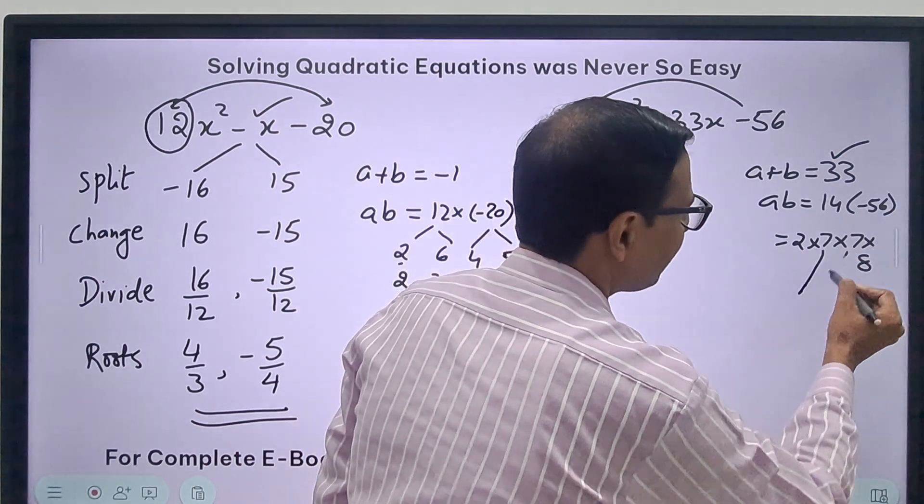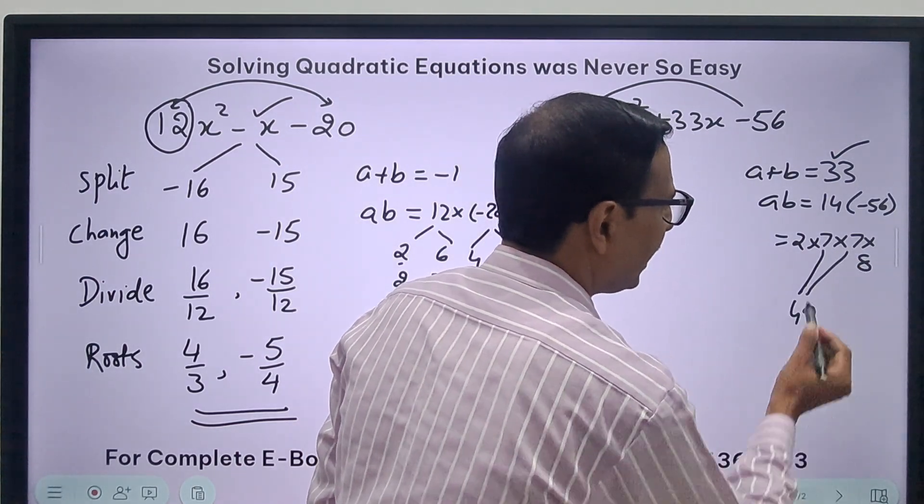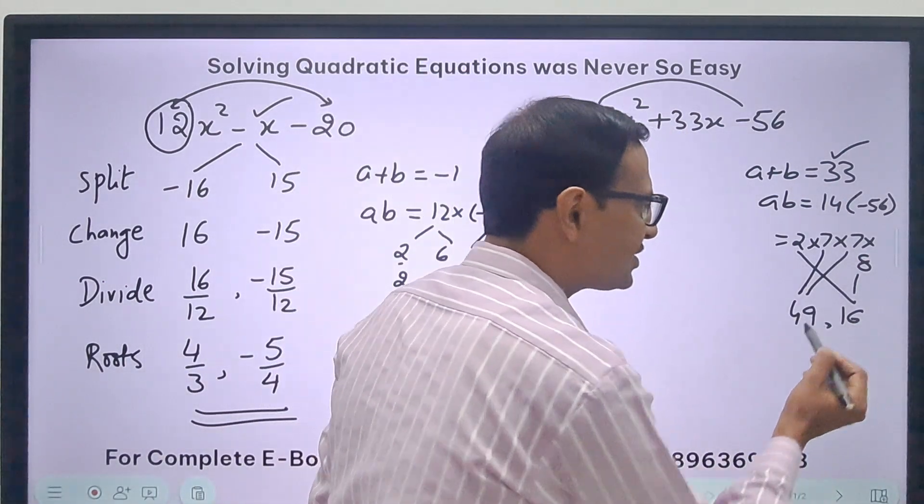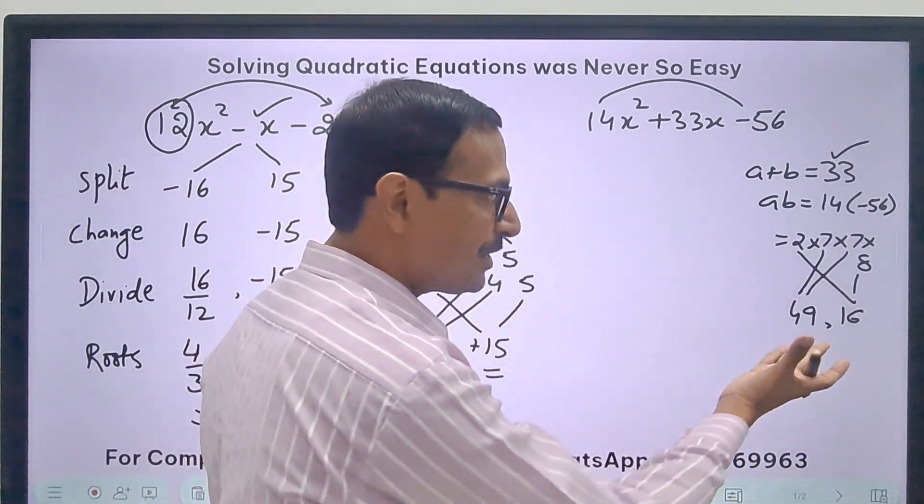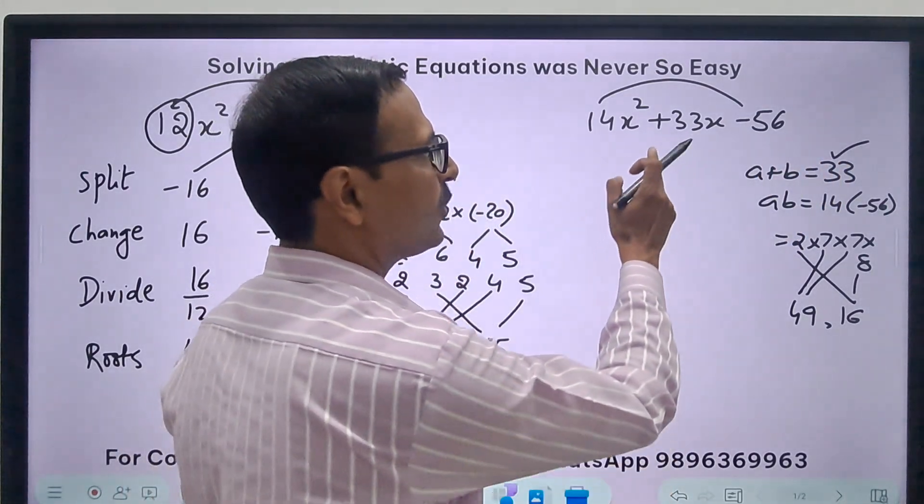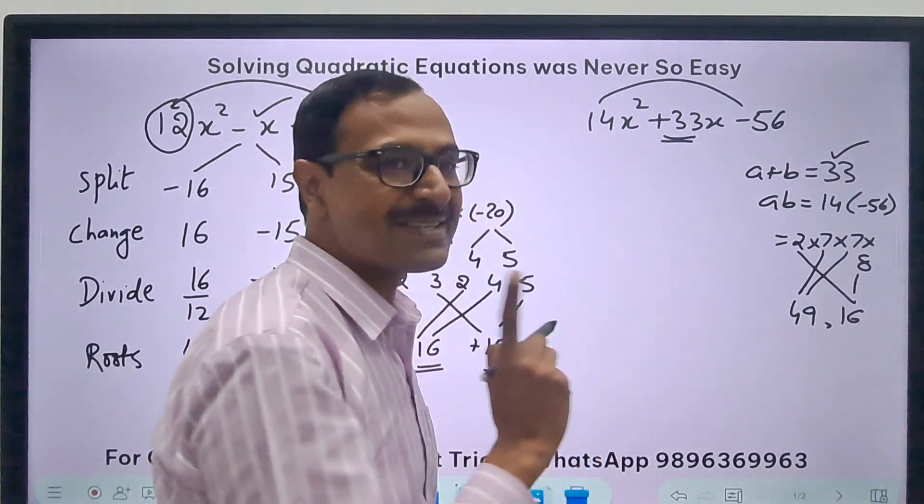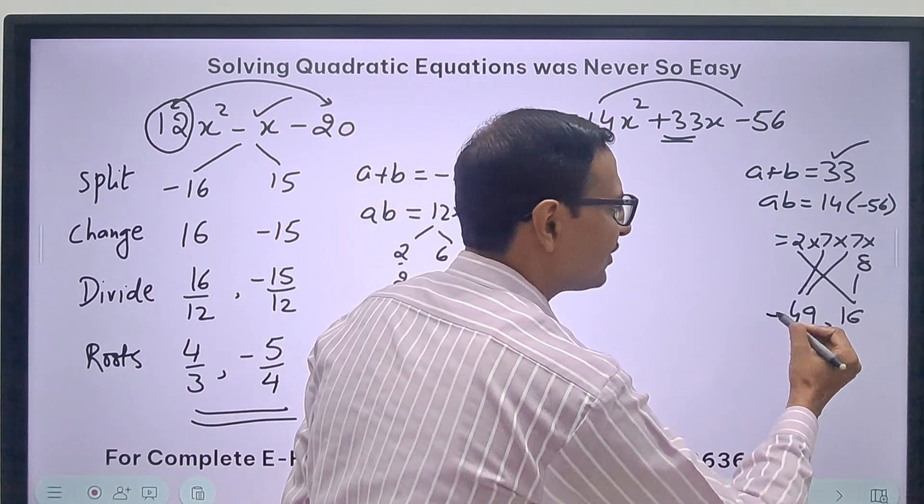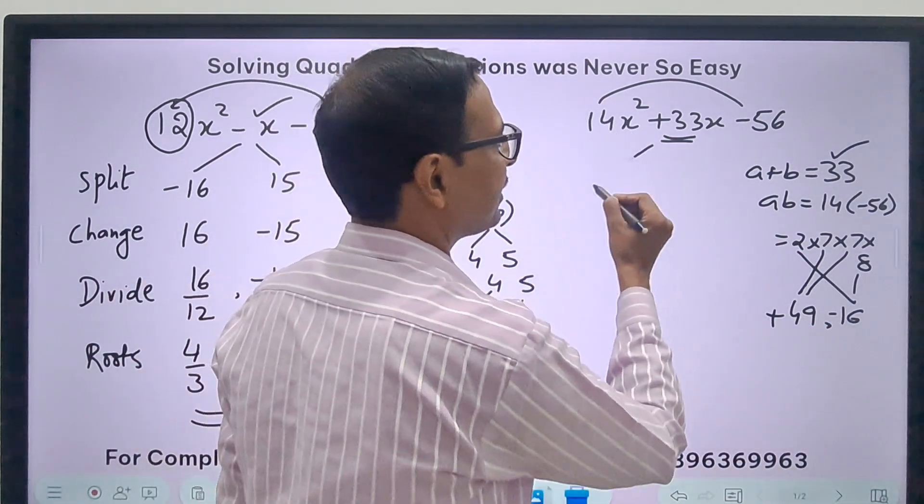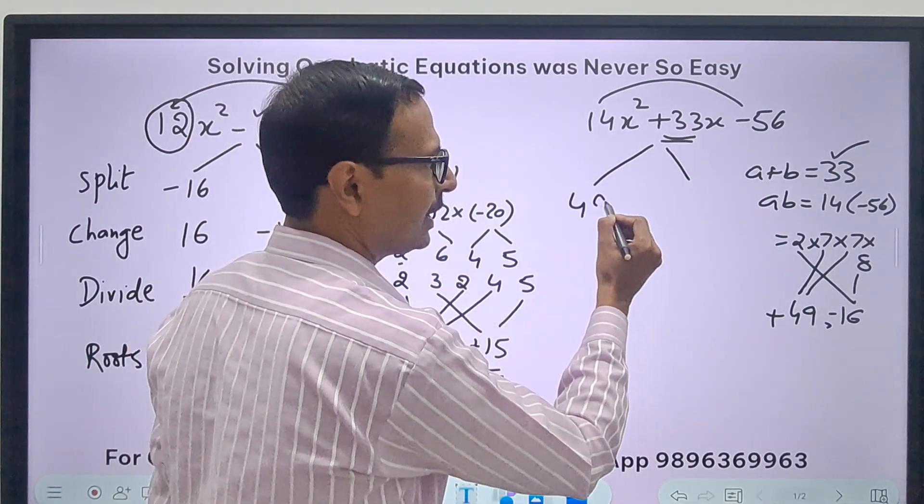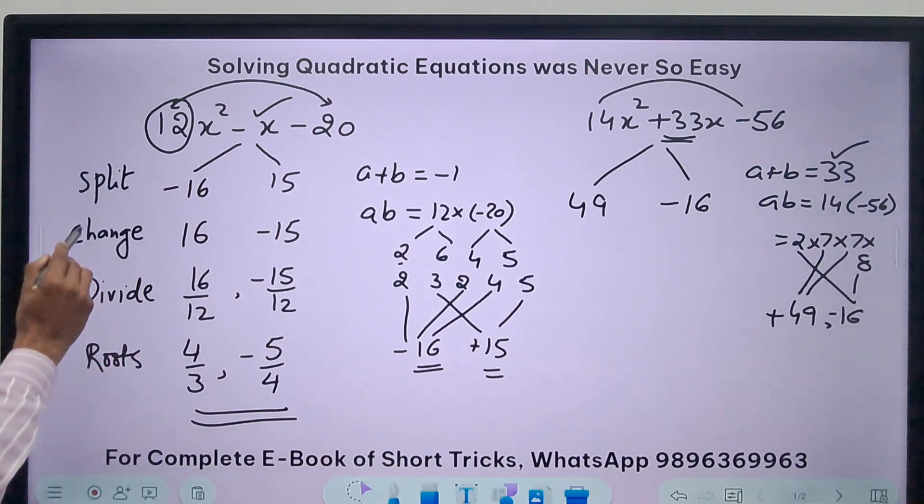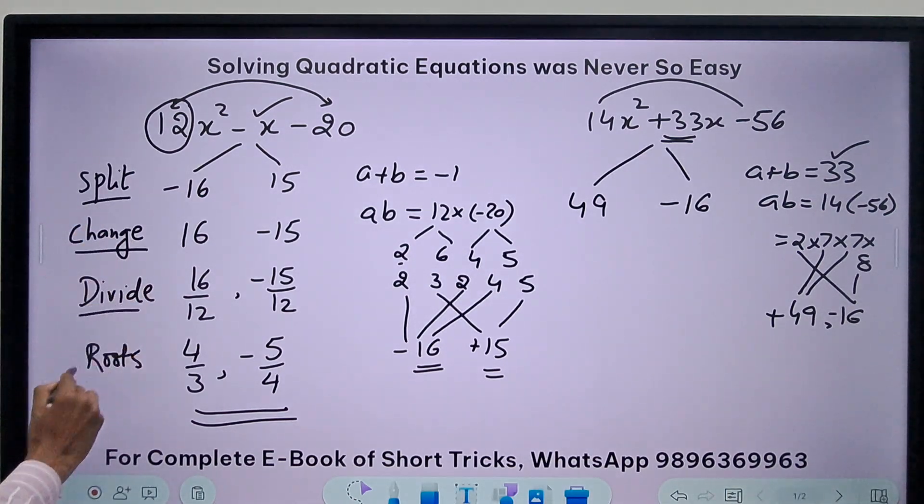How about 7 times 7 which is 49 and 2 times 8 which is 16. The first combination itself is working. 49 and 16, what is the difference? It is 33. So I need to decide on the sign. Here I need a +33, so the larger one plus and the smaller one negative. So I split it. What is the factor? +49 and -16. The next step is split, change, divide and roots.